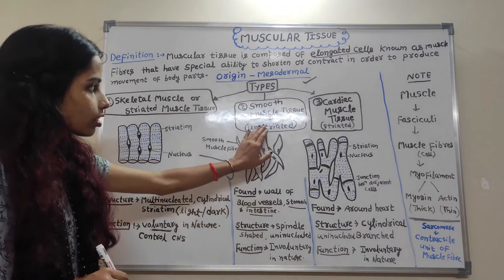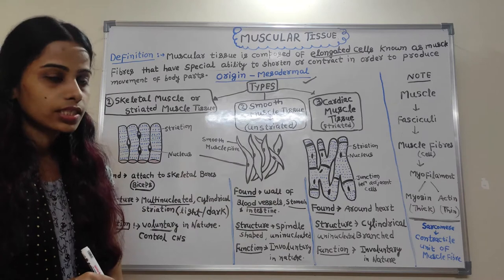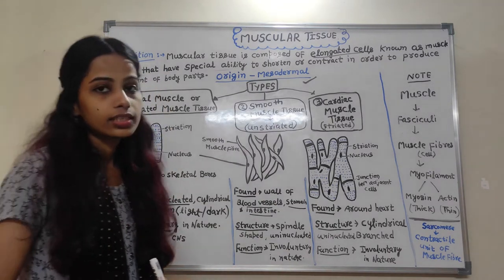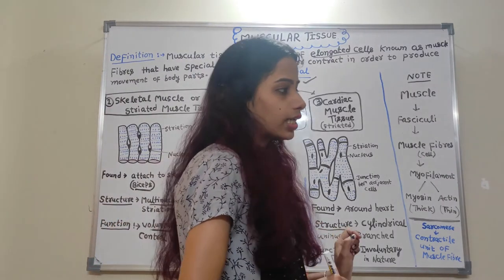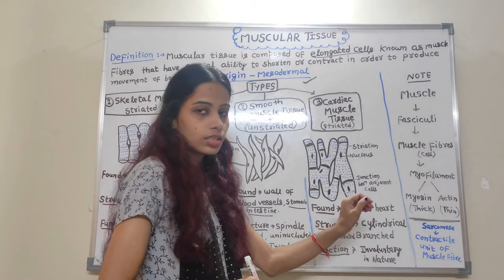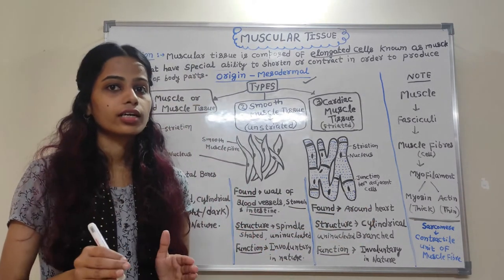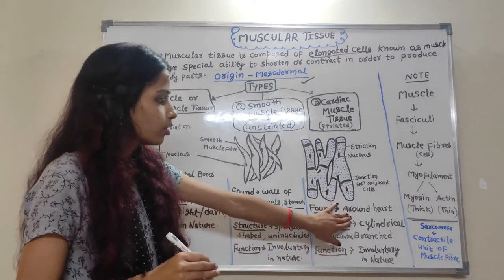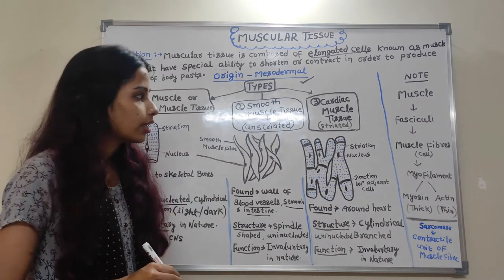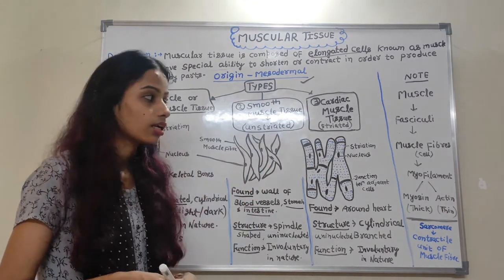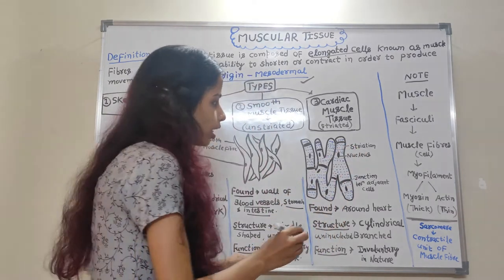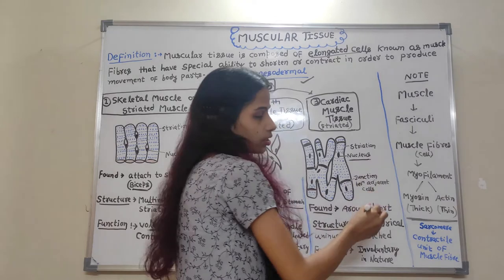The next type is cardiac muscle. As the name suggests, cardiac muscle is formed around the heart — all heart tissue is cardiac muscle tissue. Cardiac muscle is also striated in nature, meaning dark and light bands are present, and it is uninucleated, meaning one nucleus per cell.